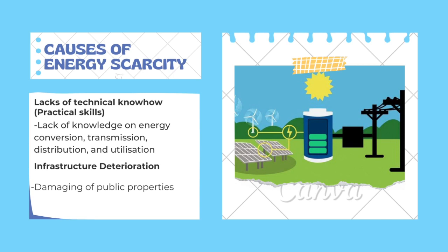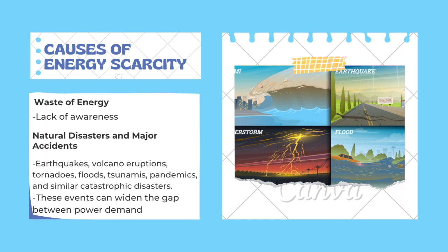Infrastructure deterioration: damage of public properties also causes major issues, as it increases the cost of repair and maintenance. Waste of energy is also a major cause of energy scarcity — that is the lack of awareness on how to use resources and energy, like keeping lights on when not needed, and wasting water when there is no requirement.